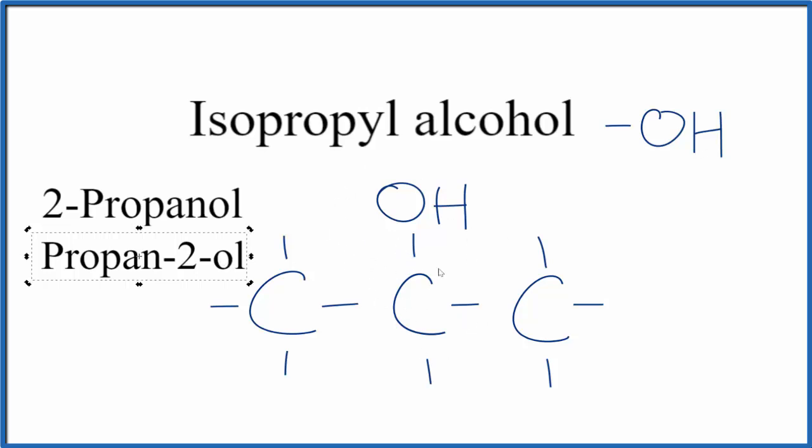If we want to write the chemical formula for isopropyl alcohol, we could just count these atoms up. We have one, two, three carbons; one, two, three, four, five, six, seven, eight hydrogens; and just one oxygen. So you get a formula of C3H8O for isopropyl alcohol.